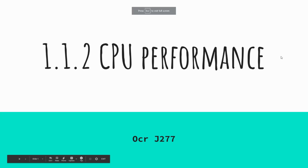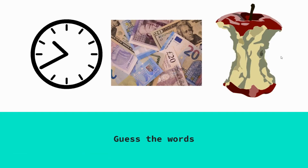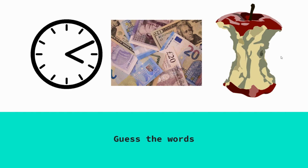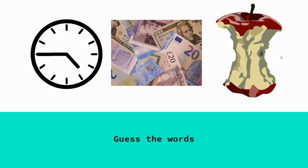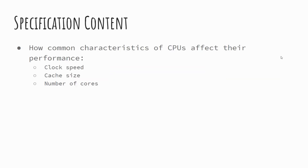Today we're going to look at CPU performance. I'm going to pause on this slide — there are three words, and I'm going to give you a chance to have a guess at them. The first one is clock, the middle one is cache, and the third one is cores. These are three words that you'll be using this lesson to gain an understanding of the things that can affect the CPU's performance.